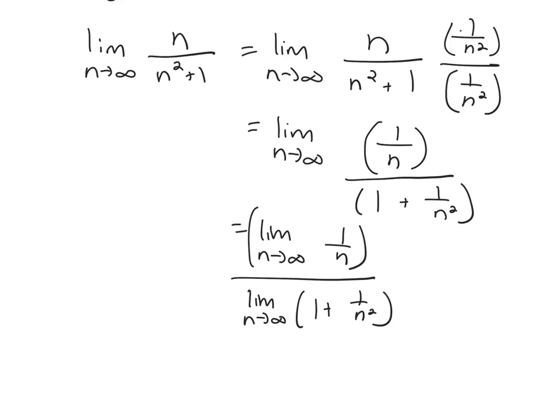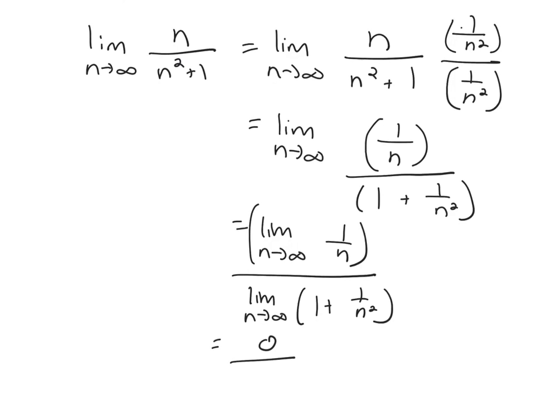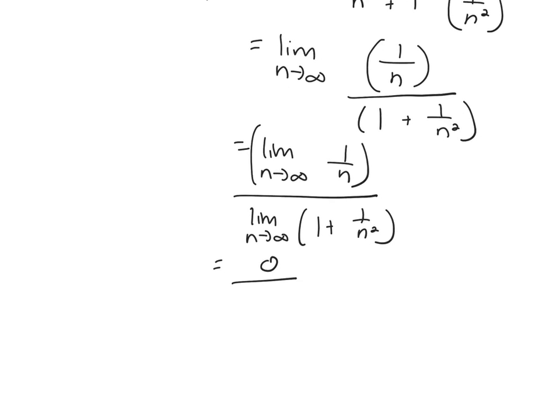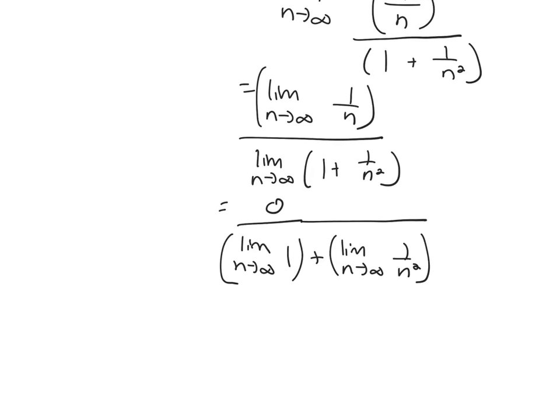So I know the numerator's limit, and the denominator, well I have a limit of a sum, right? Which our limit rules say I can split up as the limit of each piece. So I'm really looking at the limit as n goes to infinity of 1 plus the limit as n goes to infinity of 1 over n squared. What's the limit of 1? 1. What's the limit of 1 over n squared? 0.